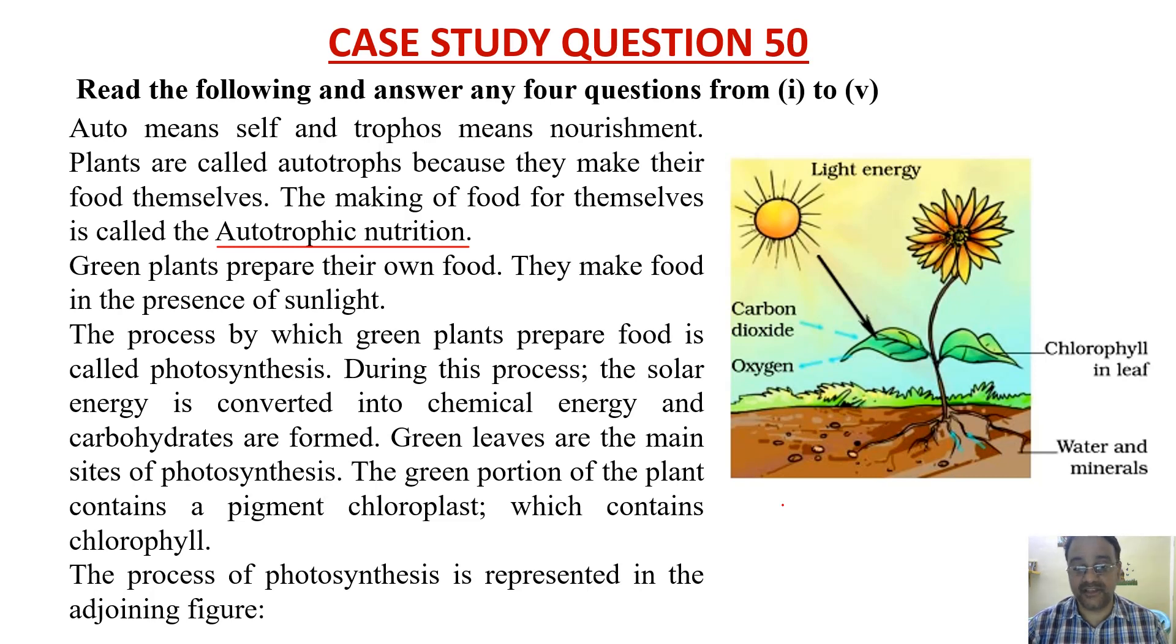Green plants prepare their own food. They make food in the presence of sunlight. The process by which green plants prepare food is called photosynthesis. During this process, solar energy is converted into chemical energy and carbohydrates are formed. Green leaves are the main sites of photosynthesis. The green portion of the plant contains pigment chloroplast which contains chlorophyll.